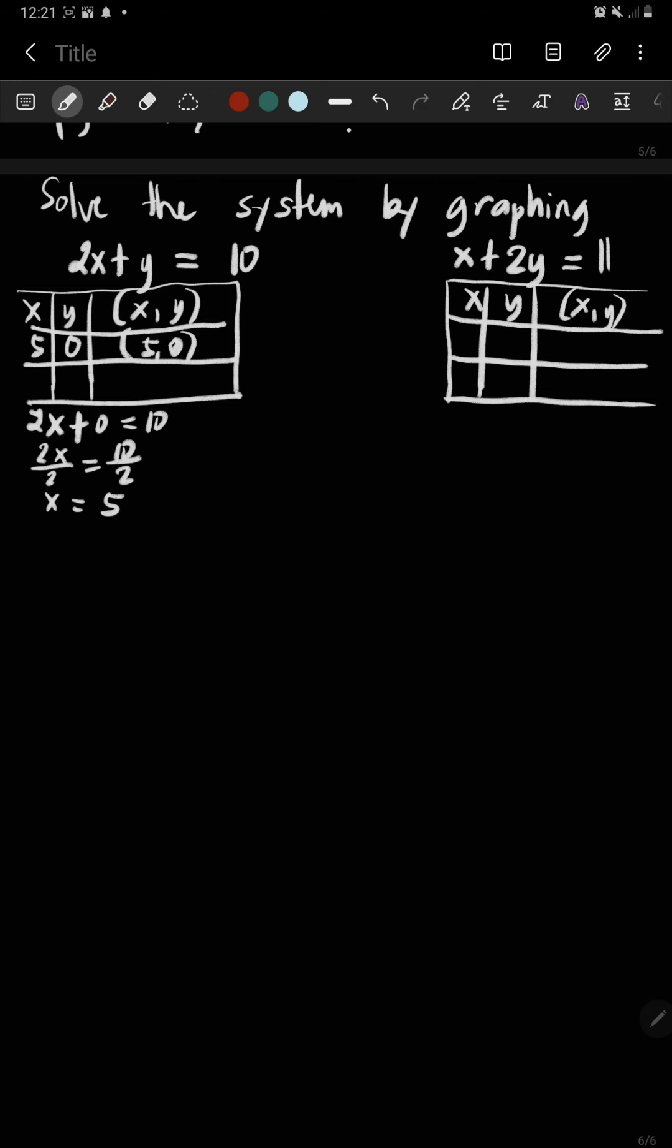Next, you find the y-intercept. Y-intercept means your x is 0. So 2 times 0 plus y equals 10. Therefore, y is 10. So you have an ordered pair 0, 10.